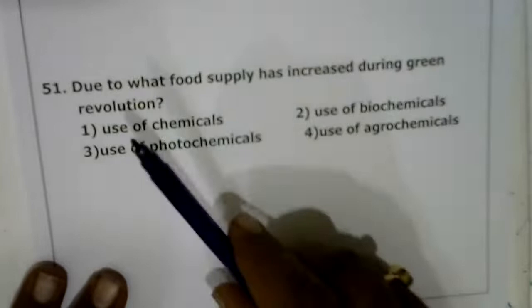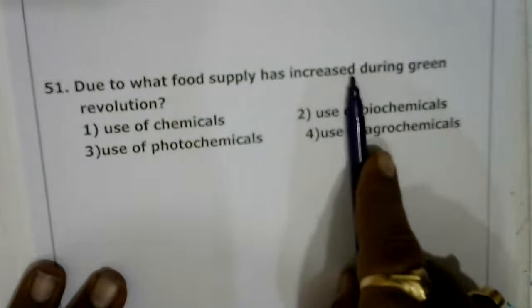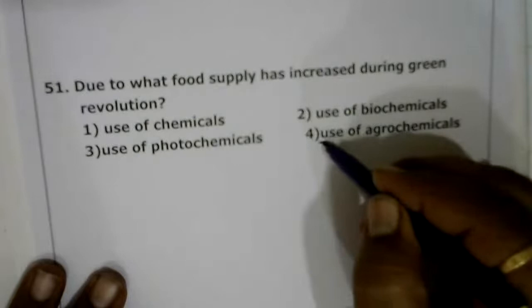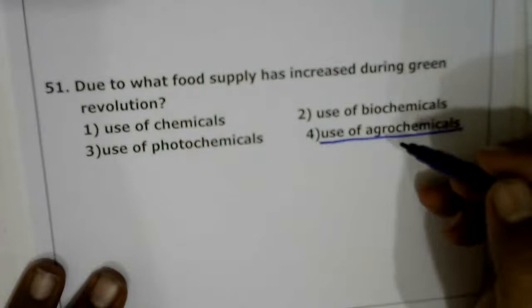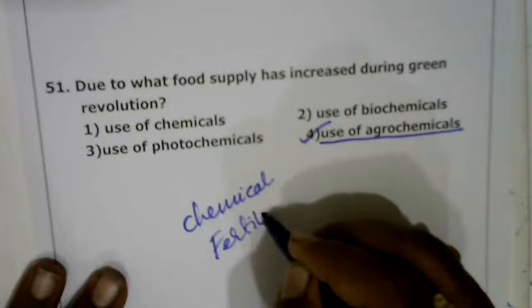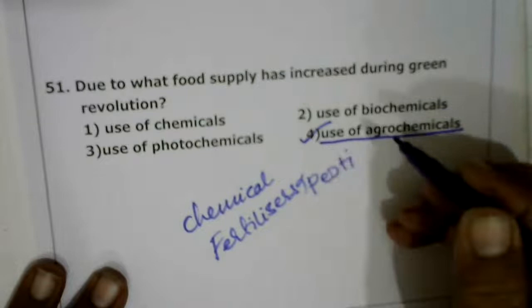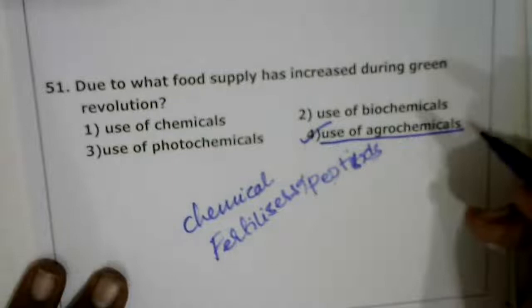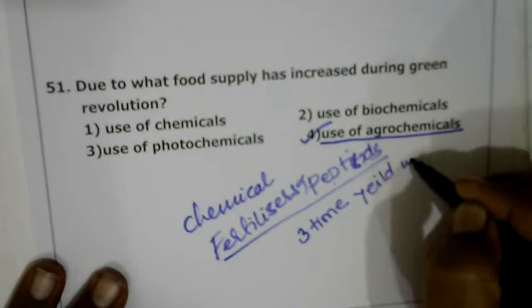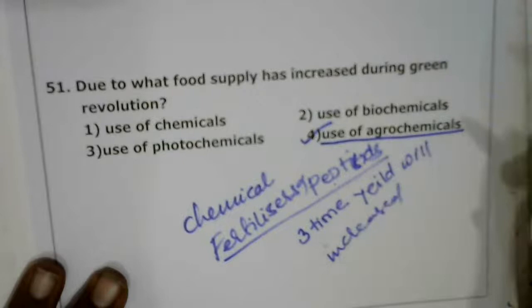Next: due to what did food supply increase during the green revolution? During the green revolution, the use of agrochemicals — that is, chemical fertilizers and pesticides — led to about a threefold increase in yield.